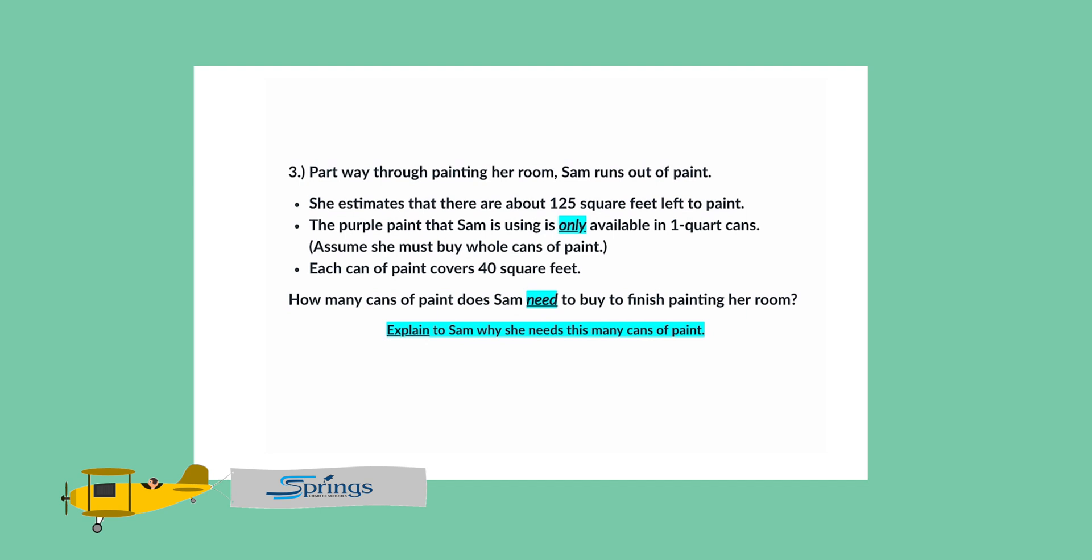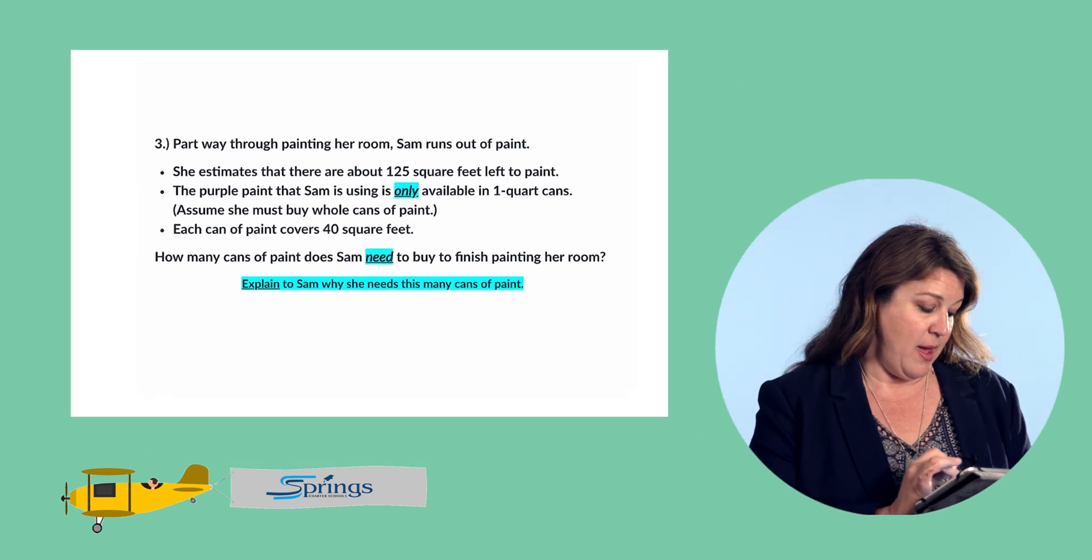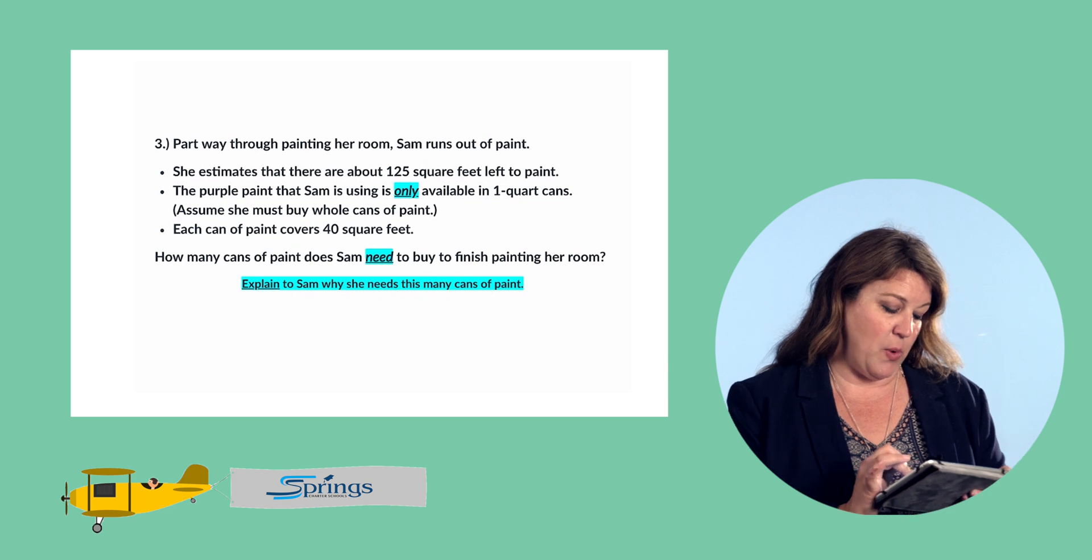She estimates that there are about 125 square feet left to paint. The purple paint that Sam is using is only available in 1-quart cans. Assume she must buy whole cans of paint, and each can of paint covers 40 square feet.